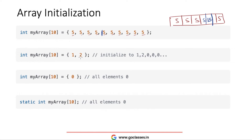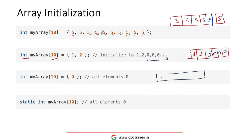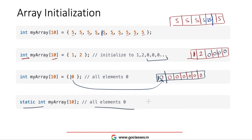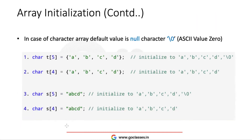You can also skip some values, meaning you only mention two values (1 and 2) while the array size is 10. The remaining values default to zeros in case of an integer array. If you specify a single value like 10, that first value will be 10 and everything else will be 0. In case of a static or global array, every value is 0 by default, but in case of a local array, every value will be some garbage value.